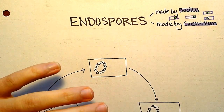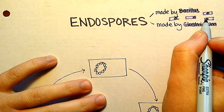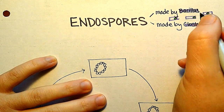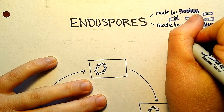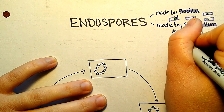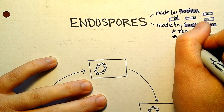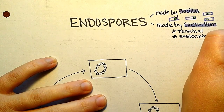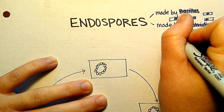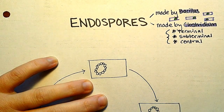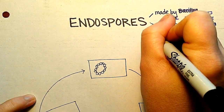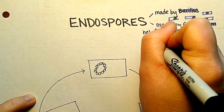The endospore can form at the end of the bacterial cell, the middle of it, or the other end. Locations are considered to be terminal — like in Clostridium tetani — or subterminal, meaning near the end, or central. Where they form the endospore, when viewed under the microscope, can be helpful in identifying a species.